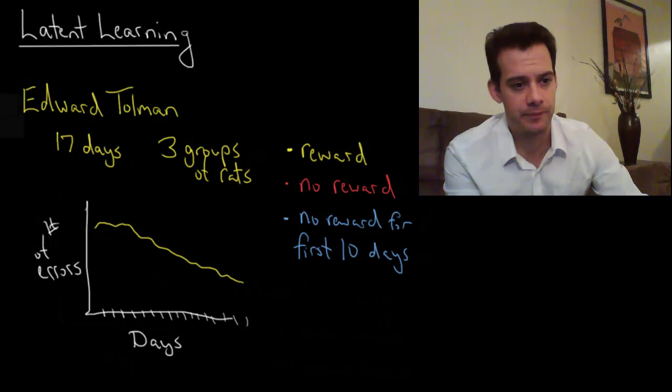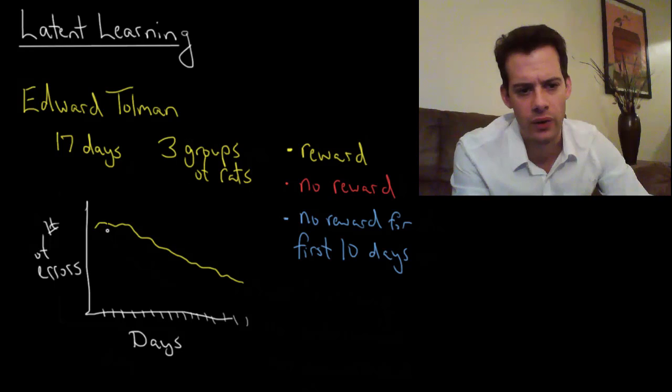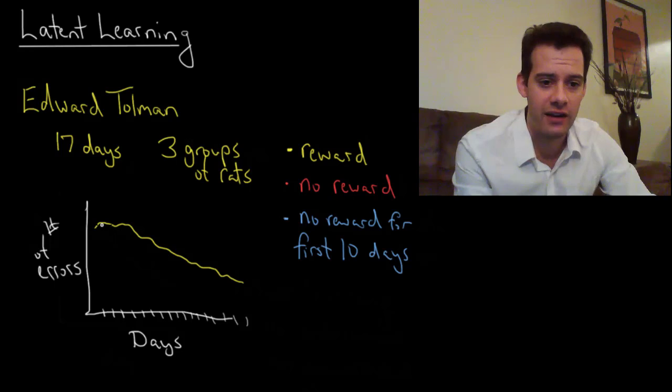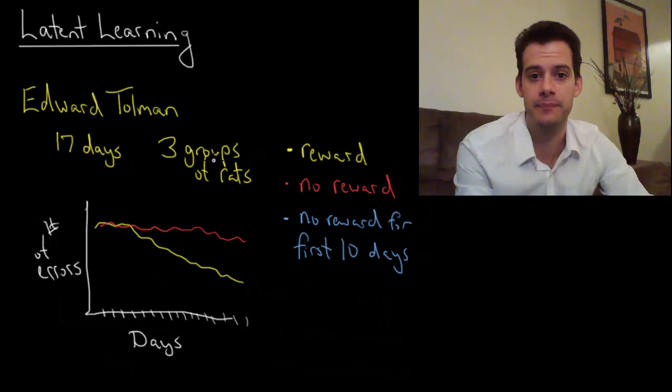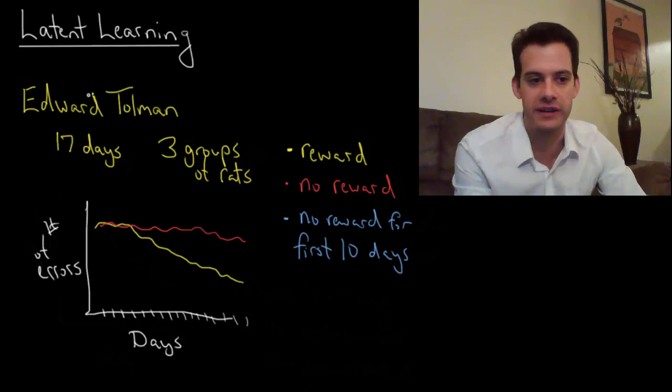How about the second group? Well the second group is not getting a reward so they don't really know what the end of the maze is. They just wander around the whole time. This follows the standard behaviorist explanation of how learning occurs. You get reinforced for something and you get better at it.